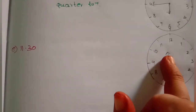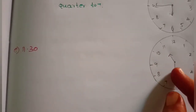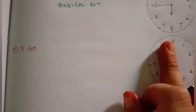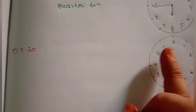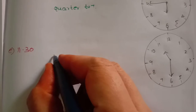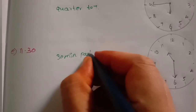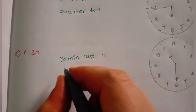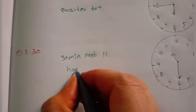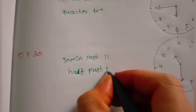Level 6:30. The minute hand is pointing straight down. So we say: half past 6.